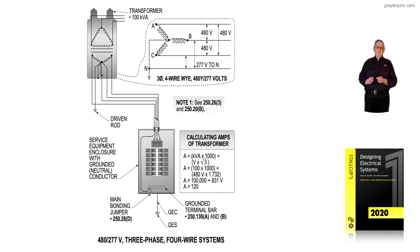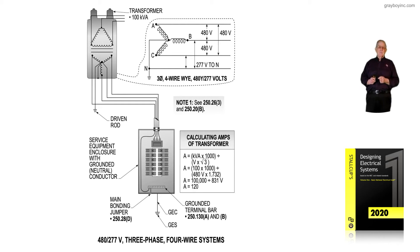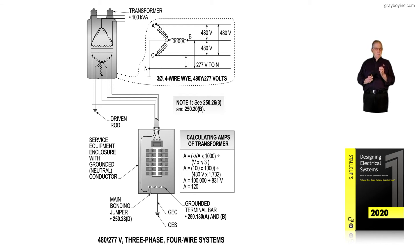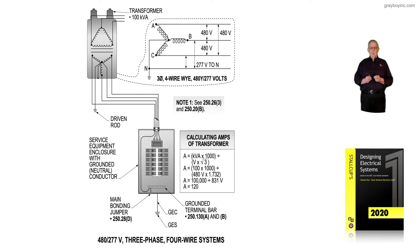If we review NEC 250.24A, the transformer outside had to be grounded. Finishing 250.24, it says you've got to ground at the first disconnect — meaning the service equipment. What happens sometimes is we had 480-volt load and no 277-volt lighting, and the electrician or designer would say, 'I don't have any neutral loads, I'll just pull in three hot 480-volt lines.' But if that transformer is grounded, NEC 250.24 requires a grounded conductor to be pulled to the service equipment — just for fault current.